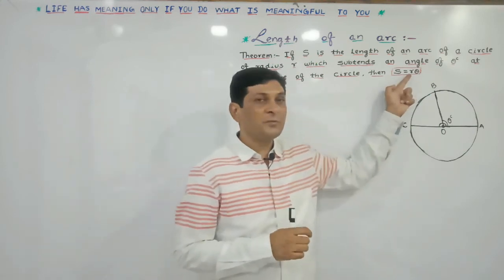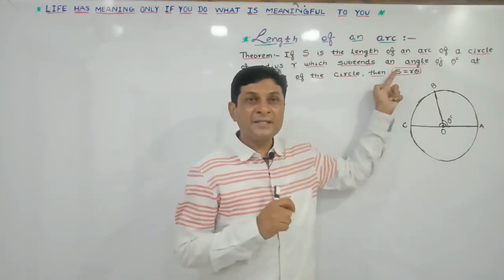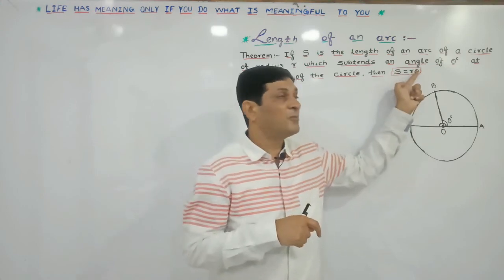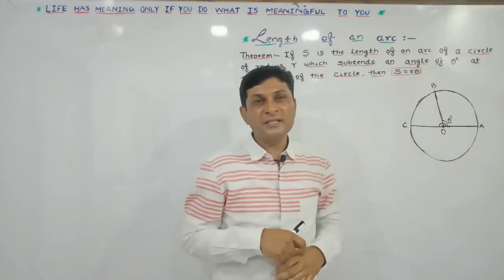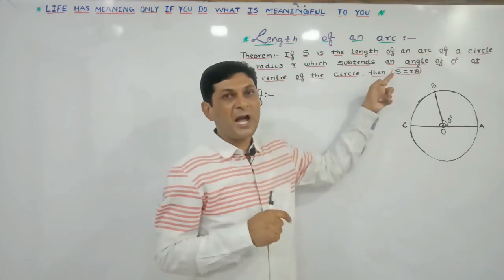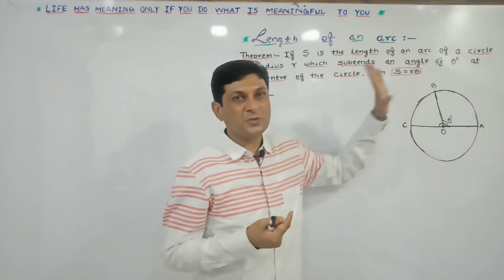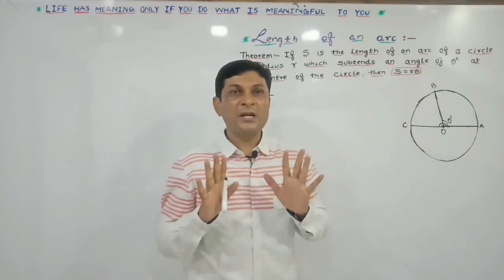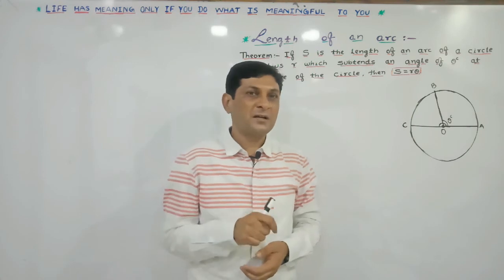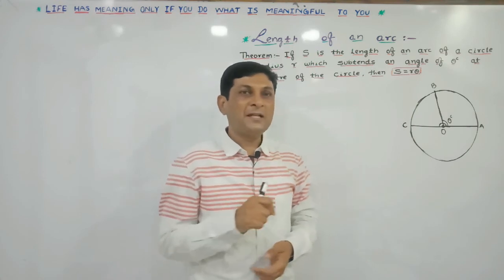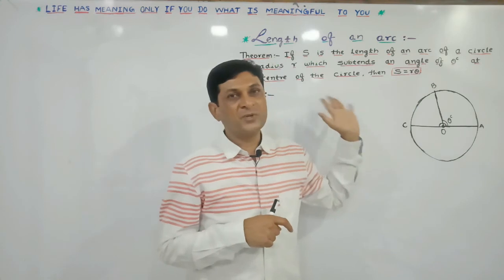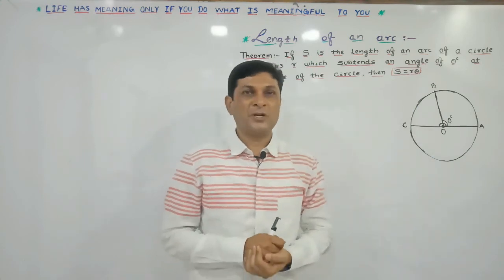Here R is the radius of the circle, and S is the length of the arc which subtends an angle of theta radian at the center. We have to prove that this length of arc can be found using the formula S equals R theta. To apply this formula we require two values: R and theta. So first let us try to prove this important formula.